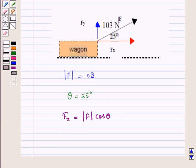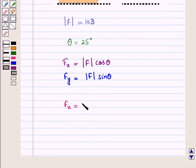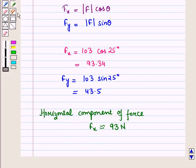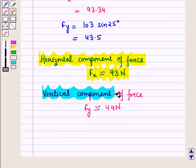Using the component form of the vector, the horizontal component Fx equals the magnitude of f times cos theta, and the vertical component Fy equals the magnitude of f times sin theta. So Fx equals 103 times cos 25 degrees, which equals approximately 93.34 newtons, and Fy equals 103 times sin 25 degrees, which equals approximately 43.5 newtons. Thus the horizontal component of force Fx is approximately 93 newtons and the vertical component Fy is approximately 44 newtons.